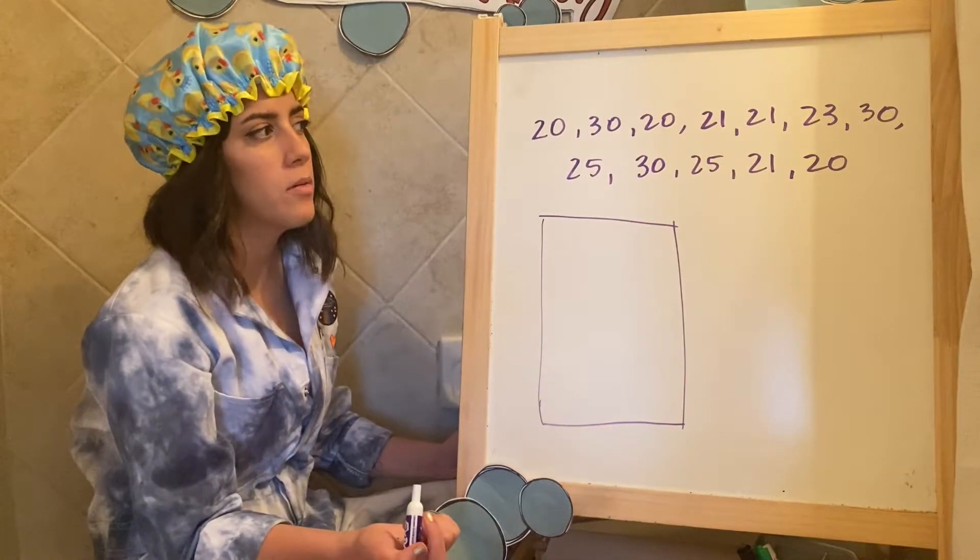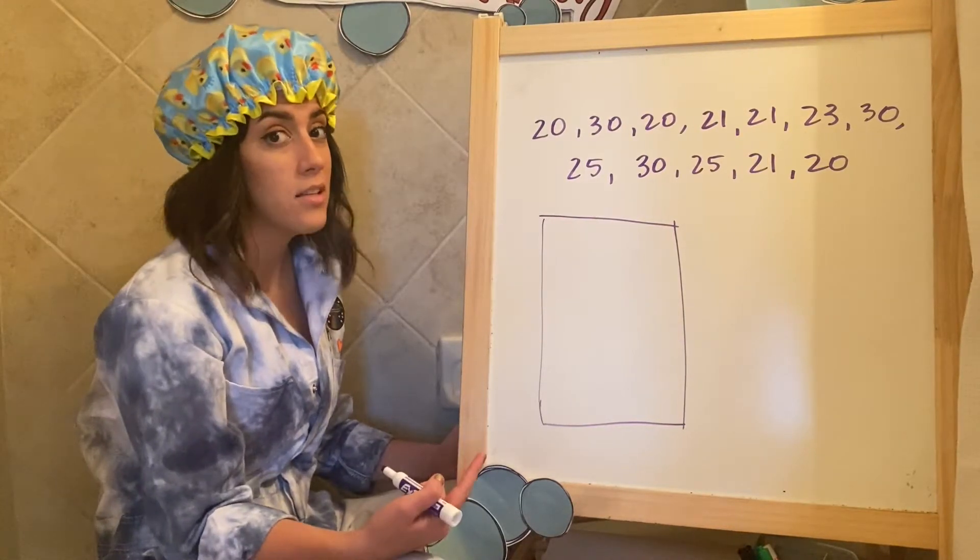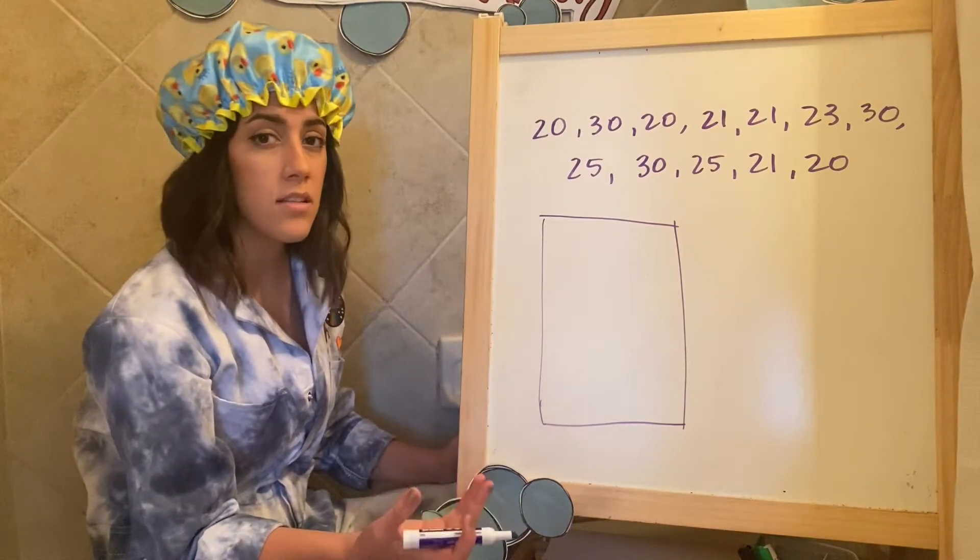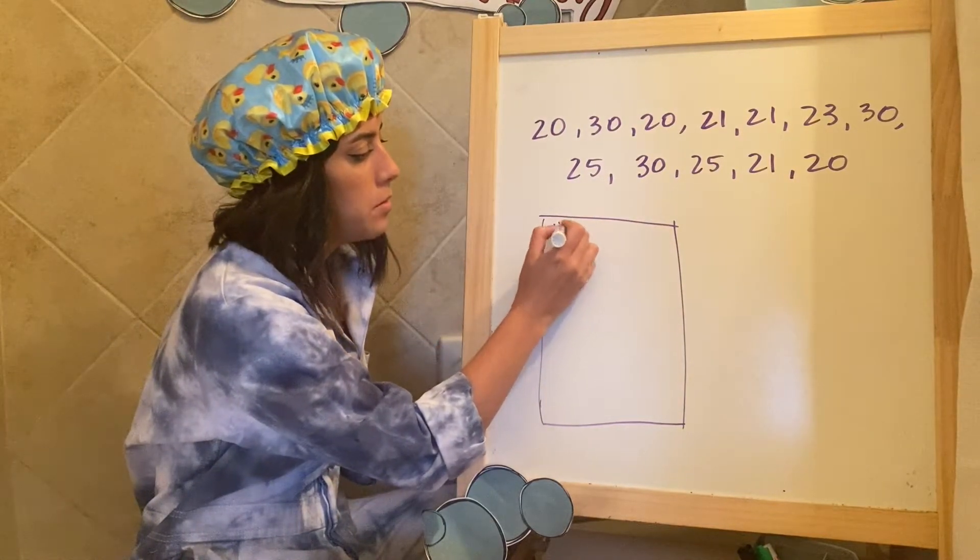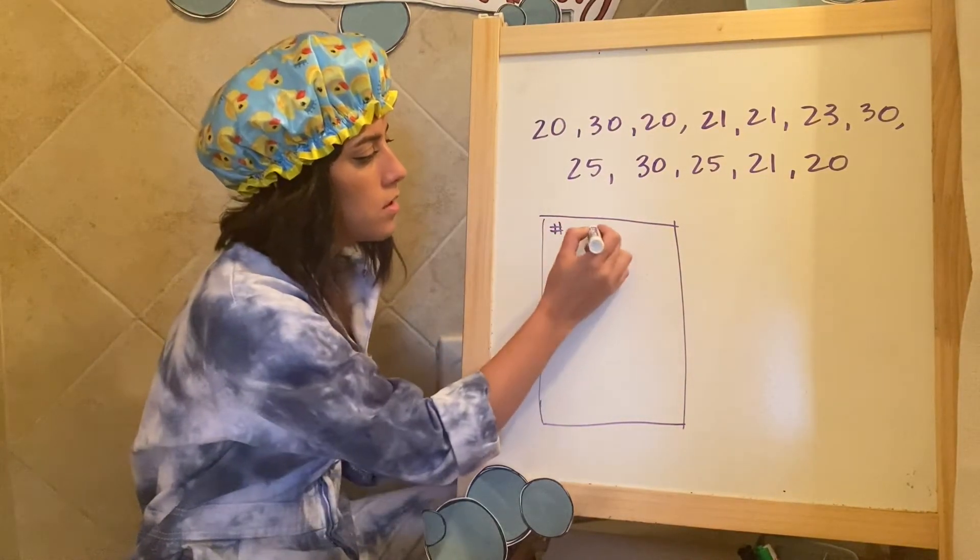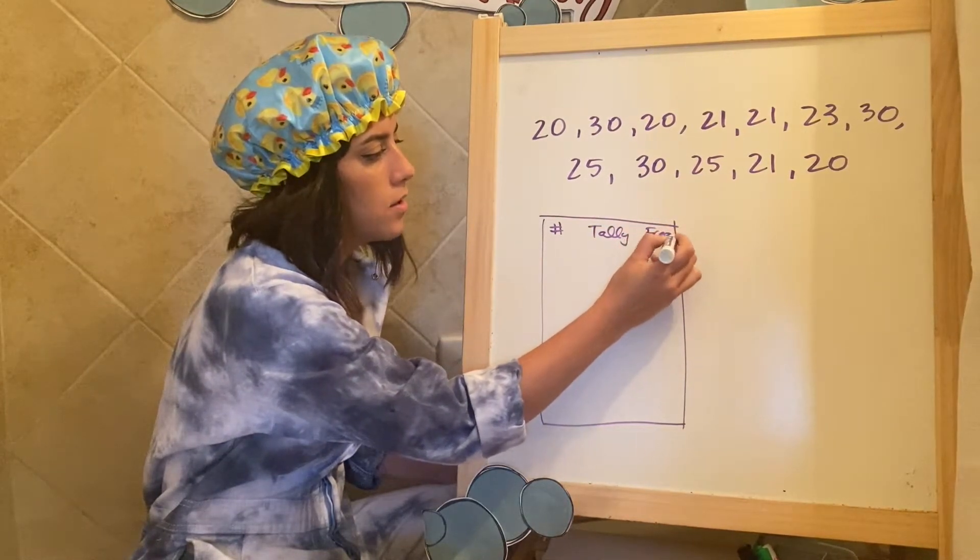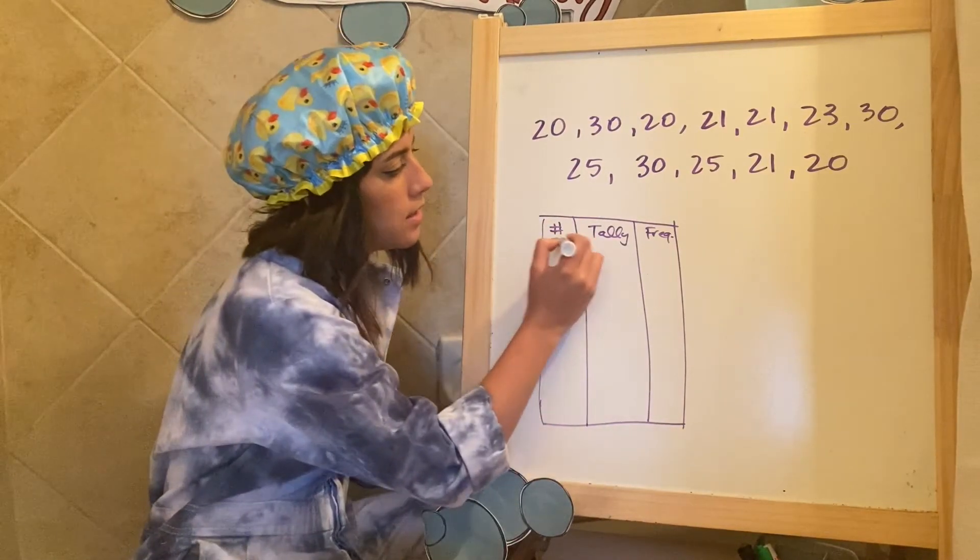But I can see that some of them kind of repeat themselves. Some of them don't. Maybe that it's my data instead of coins and siblings and TV shows. Maybe it's just numbers. So maybe I would be putting my first column as numbers. This is still tallies. And then this is my frequency. So that last column is always like how many there were of that.